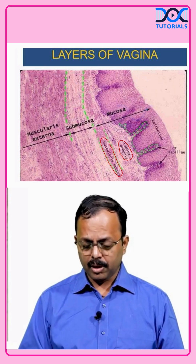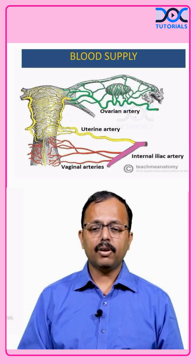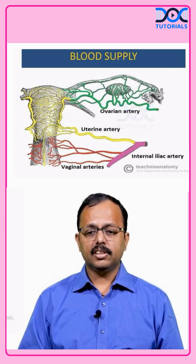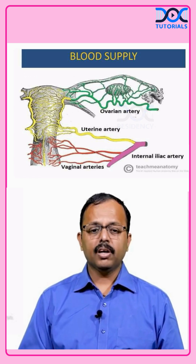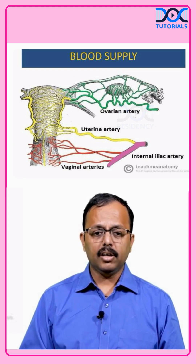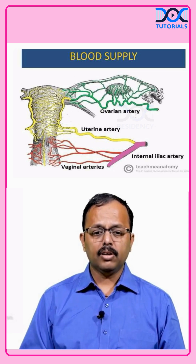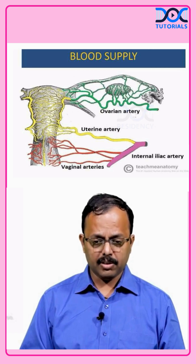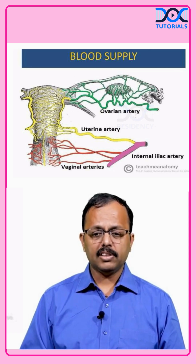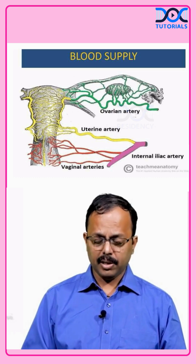The blood supply of the vagina is extensive. There is extensive cross-communication between the uterine vessels and ovarian arteries, which supply the ovaries and uterus separately, but they have cross-communication at the anastomotic level. Primarily, the vaginal arteries arise from the internal iliac artery as arborizing networks which supply the vagina.